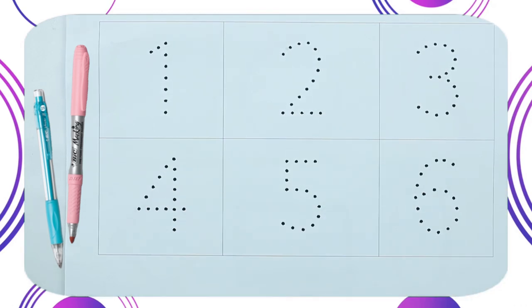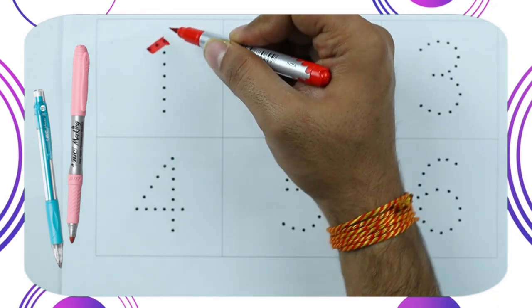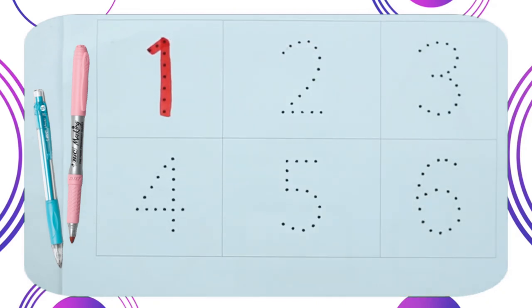Let's start. Write numbers 1 to 10. It's number 1. Yes! Number 1 with red color.